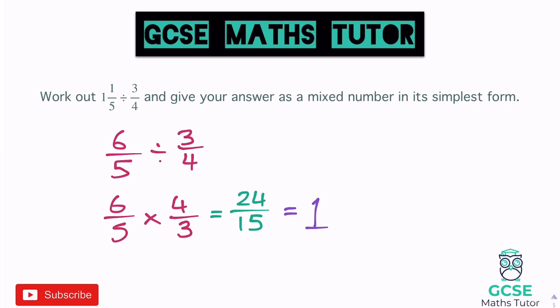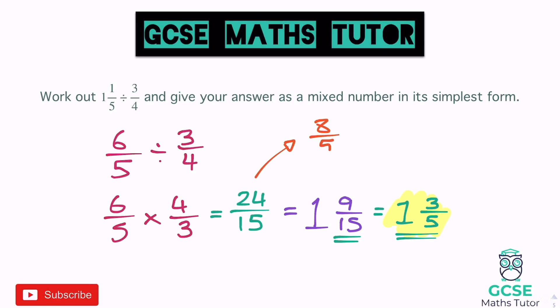15 goes into 24 once, with a remainder of nine, so we have one and nine over 15. That fraction does simplify — both divide by three: nine divided by three is three, 15 divided by three is five. Final answer: one and three fifths. Alternatively, you could have simplified 24 over 15 first — both divide by three to get eight fifths — and then converted: five goes into eight once with a remainder of three, giving one and three fifths. Either method works. Just remember: keep the first, flip the second, change to multiply — or 'keep, flip, change.'